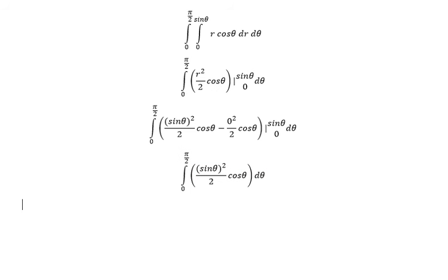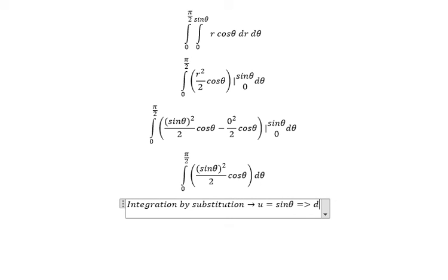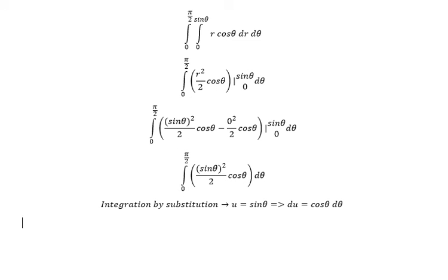Next, we need to use integration by substitution. So we put U equal to sine theta, then we get dU equal to cosine theta d theta. Next, we need to change the boundaries.